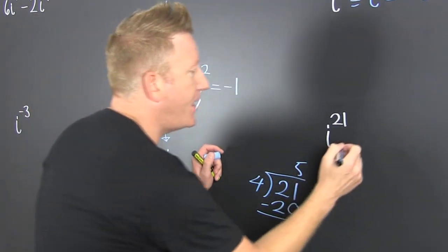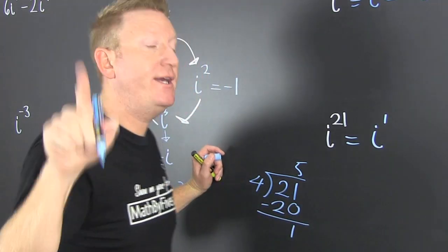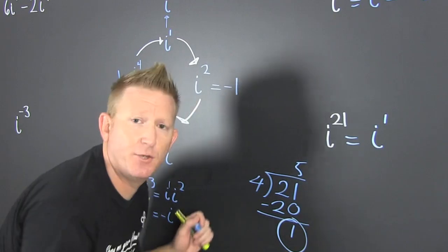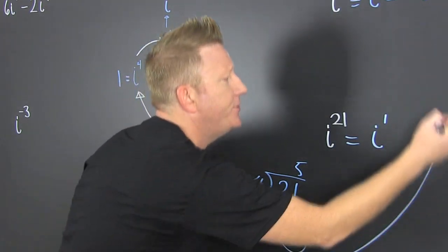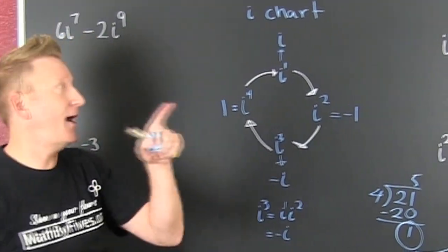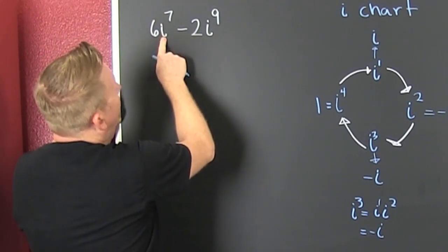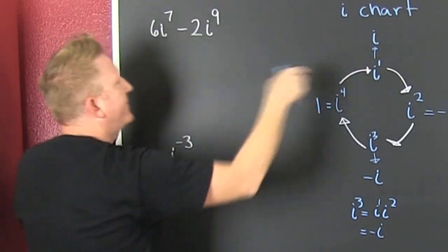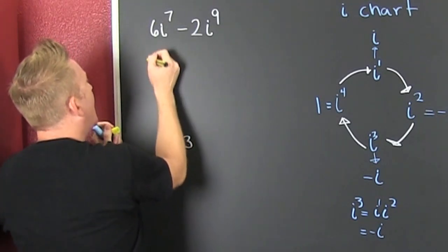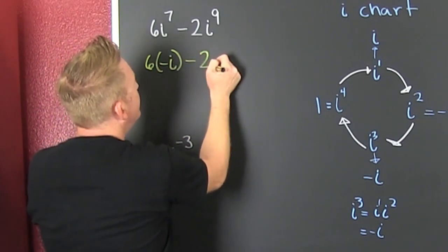So what does that even mean? That means this is the same as i to the one power, which off of the i chart — it's the remainder that gives you your new power of i. And i to the seventh was minus i, so that's going to be six times minus i, and then I subtract off two times.